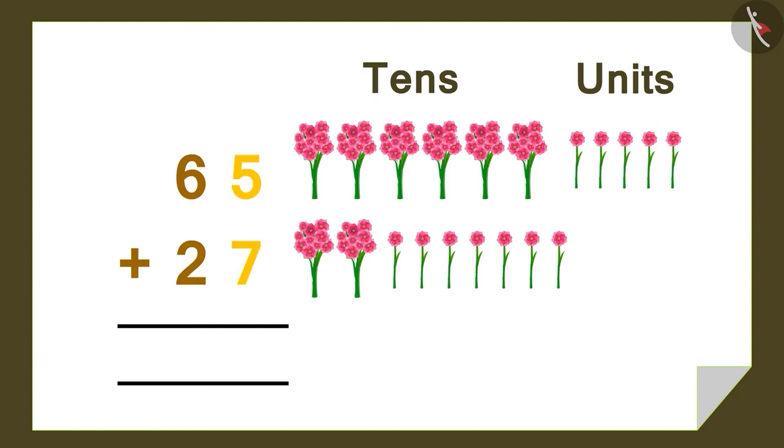First, let's combine the numbers in the unit's place. Come, let's count how many single flowers there are. 1, 2, 3, 4, 5, 6, 7, 8, 9, 10, 11, and 12.